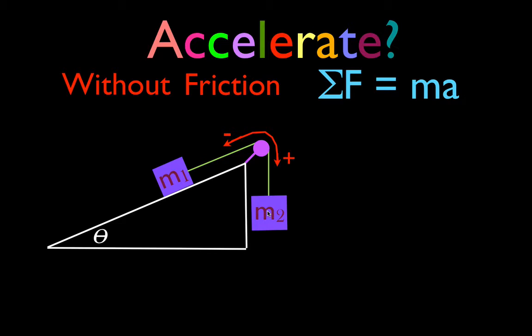Or we could have negative acceleration. Negative acceleration is really in the negative direction, so M1 would move down the incline plane and M2 would move up.